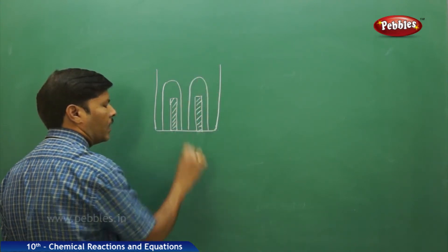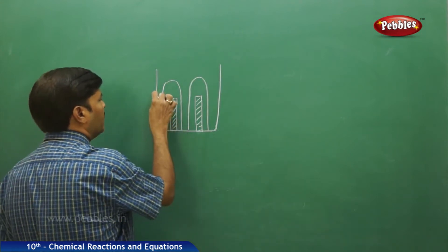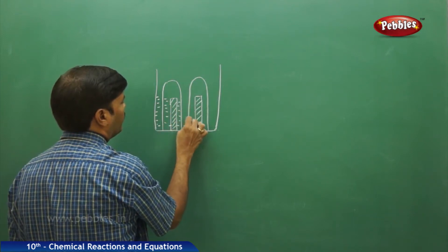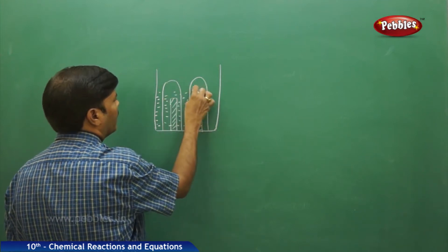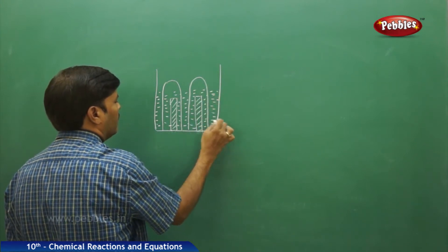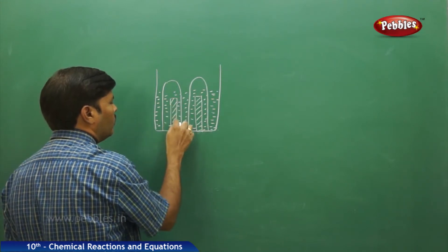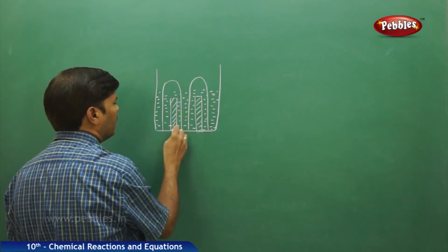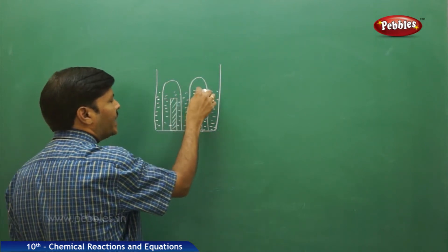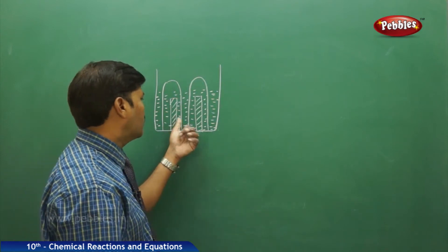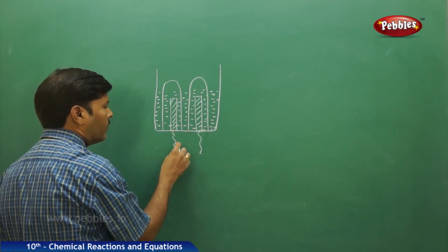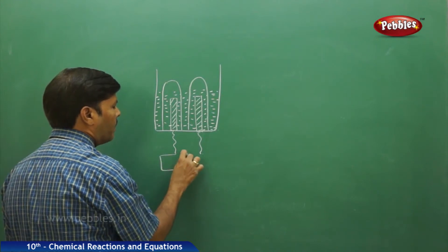You fill the electrolytic cell with the electrolytic solution. For the two carbon rods in the electrolytic cell, after filling the electrolytic solution, there are two inverted glass tubes placed over them to collect the gas bubbles. These two carbon rods are then connected to the battery using platinum conducting wire.